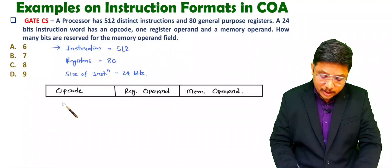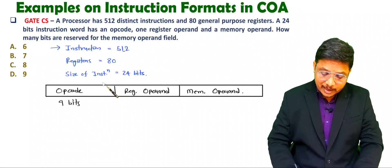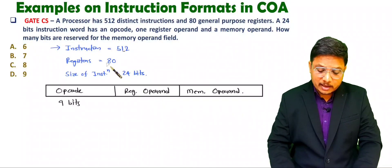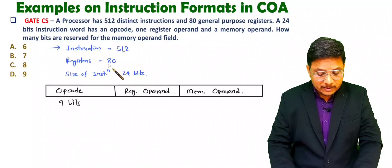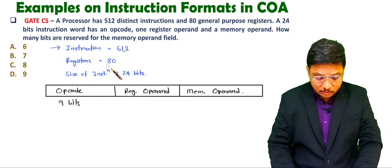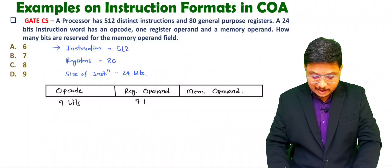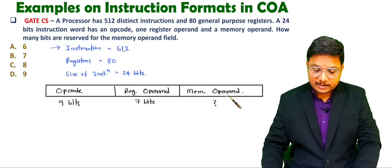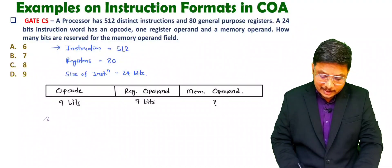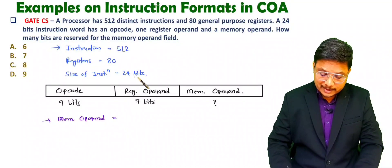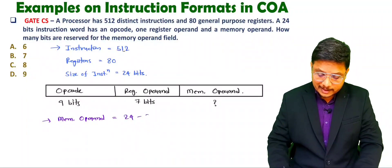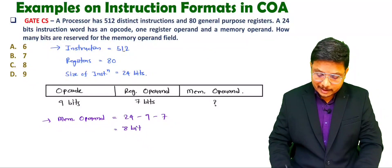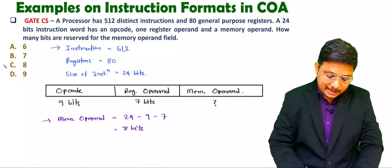So for the opcode you need 9 bits. The processor has 80 registers: for 64 you need 6 bits, and for 128 you need 7 bits, so from 65 to 128 you need 7 bits — meaning the register operand has a size of 7 bits. The memory operand size is then: total size 24 minus opcode size 9 minus register operand size 7, which gives 8 bits. So the memory operand size is 8 bits.